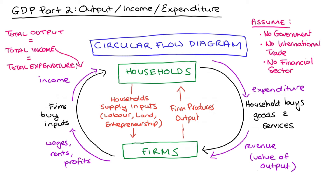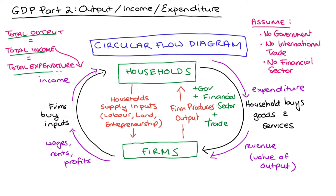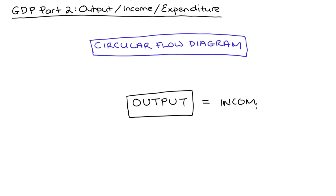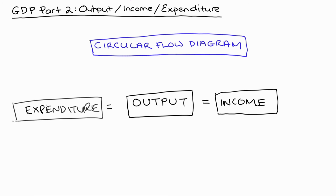The idea behind the circular flow model is that even if we made a more complicated and more realistic model — even if we added different sectors such as a government, a financial sector, or allowed for trade — once we trace the flows of expenditures, the flows of incomes, and the value of the total output, they will still be equal to one another. This equality is somehow a fundamental part of how the economy works. This is the general conceptual point of the circular flow model that points to the equality of output, expenditure, and income. For every dollar of output produced, this is associated with one dollar of income for the providers of the inputs. Equally, we can think about that in terms of an equivalent expenditure associated with purchasing that output.